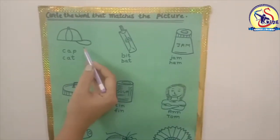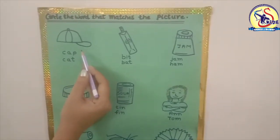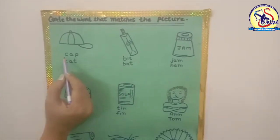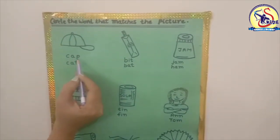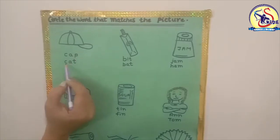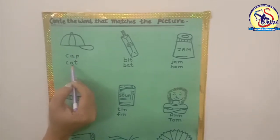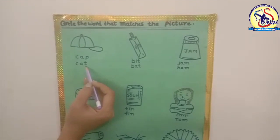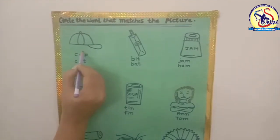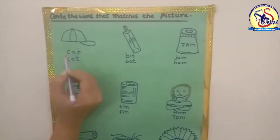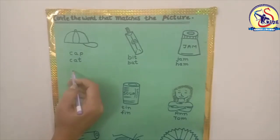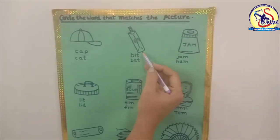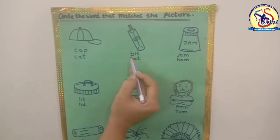Our first picture — which picture is this? Yes, this is a cap. C-A-P, cap. Or C-A-T, cat. Which is the correct word? Cap. Cap is the correct word.